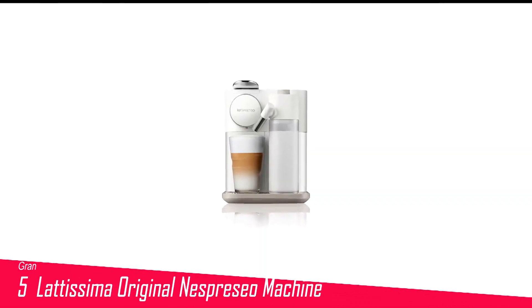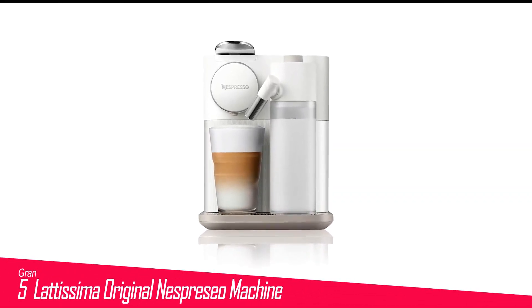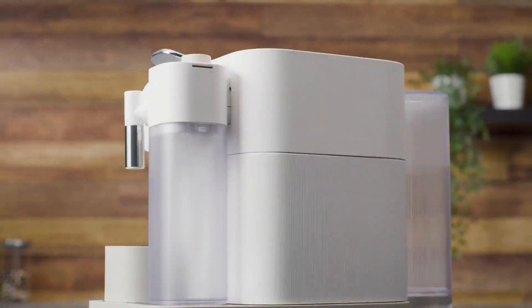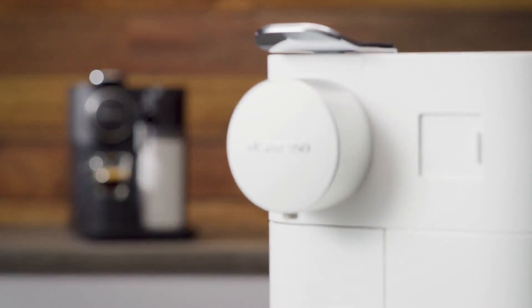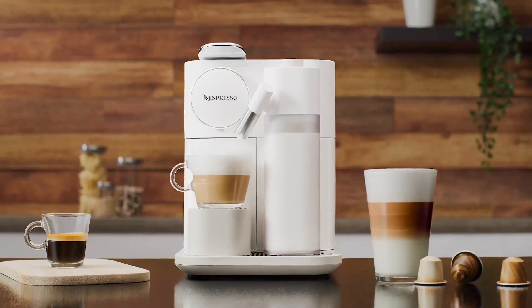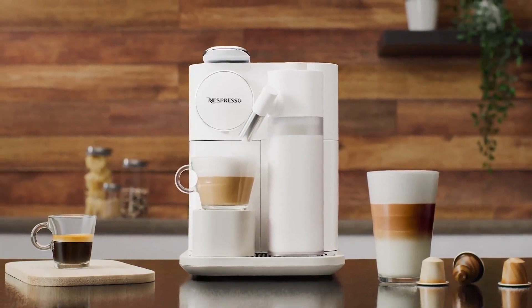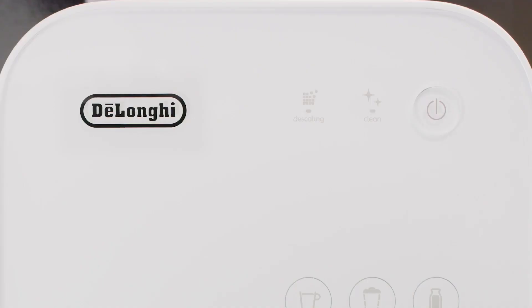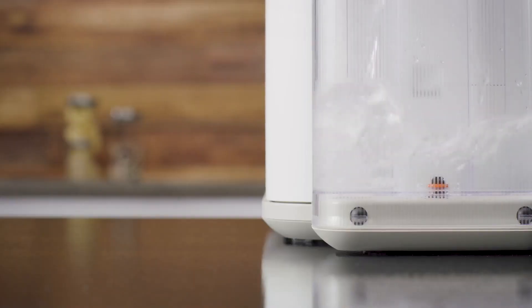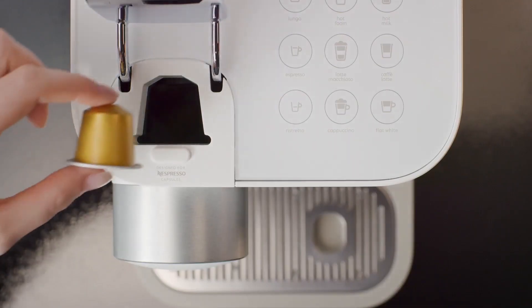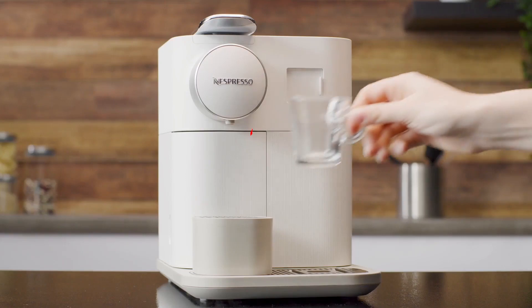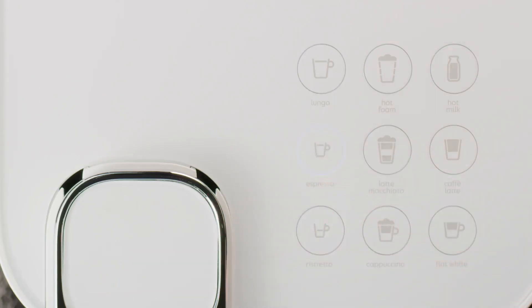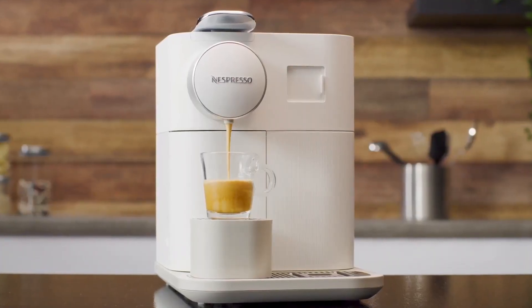Number 5 in my list is Grand Lattissima Original Nespresso machine. The Grand Lattissima strikes a happy medium between the sleek, easy-to-use design of the Vertuo Plus and the more complex features of the Creatista series. You can select from nine presets on the top panel: ristretto, espresso, lungo, cappuccino, latte macchiato, flat white, cafe latte, hot milk, and hot foam. The labeled buttons and LED screen make it exceptionally easy to pick what you want.